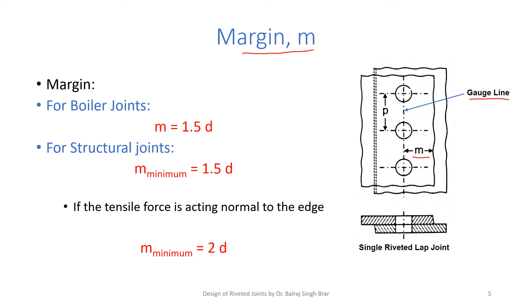And for boiler joints, it is suggested that margin should be 1.5 times D, where D is the rivet hole diameter. It should not be less than 1.5 times D and also should not be more than this, because then if edges are more, there is a chance of leakage at the edges.